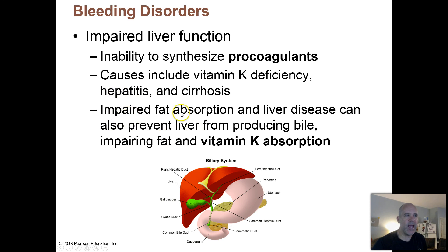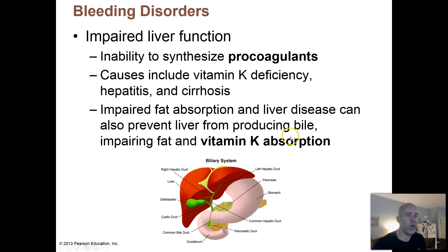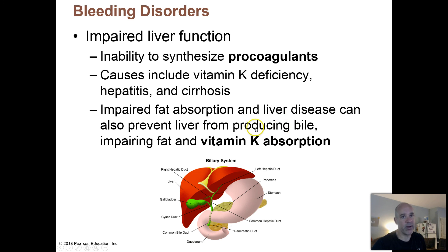If you can't absorb fats from your diet, that's also a problem because vitamin K is a fat-soluble vitamin — it's dissolved in the fats we take in from our diets. If you can't absorb fats properly from your intestinal tract, you won't be able to take in vitamin K. In order to dissolve fats from your diet, you need to produce bile — a substance that acts like the dishwashing detergent of your digestive system. Your liver makes bile, so if your liver isn't functioning properly, it may also reduce production of pro-coagulants because you won't absorb vitamin K properly from your diet.